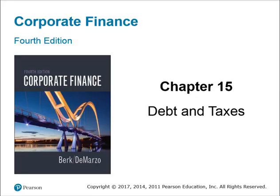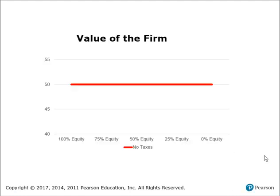In this chapter, we're going to take a look at capital structure, but now we're going to incorporate what theorists and researchers refer to as market imperfections. The first one we're going to add for this chapter is debt and taxes. So let's talk about how taxes influence the financing decision. In a previous video, we talked about the value of a company in a world that has perfect capital markets.